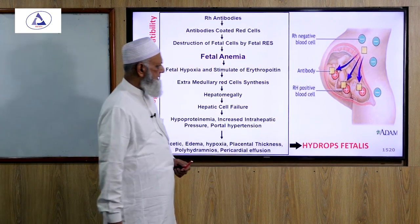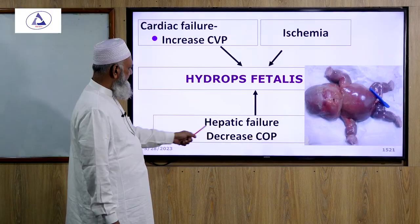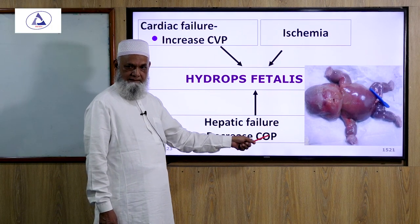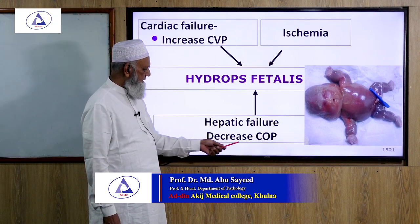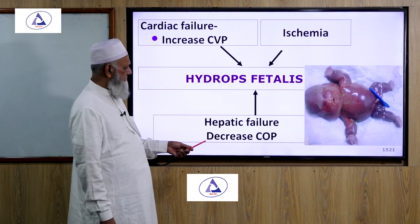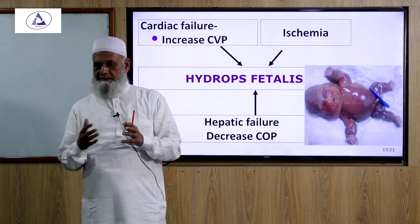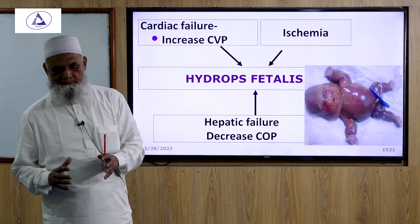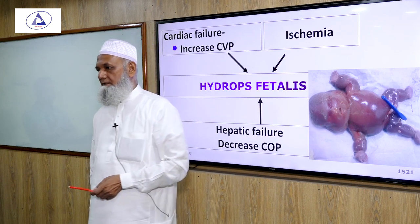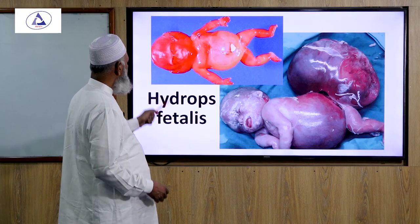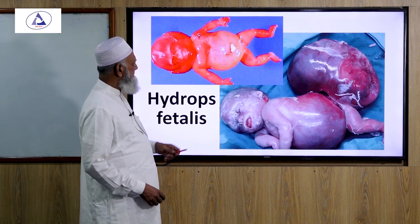These changes lead to hydrops fetalis with cardiac failure and ischemia. Hepatic failure decreases colloidal osmotic pressure because the liver produces albumin; hepatic failure reduces albumin, causing decreased colloidal osmotic pressure. This results in fluid accumulation within cells and interstitial tissue spaces — hydrops fetalis — where the fetus skin is filled with water and all organs are swollen and destroyed.